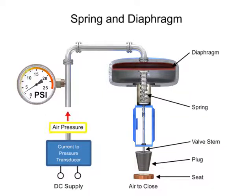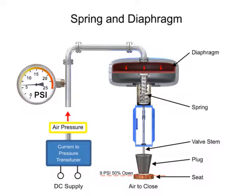For example, a pressure of 9 PSI applied to the diaphragm moves the spring and valve stem to 50% of operating range.